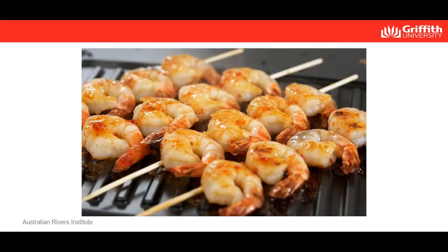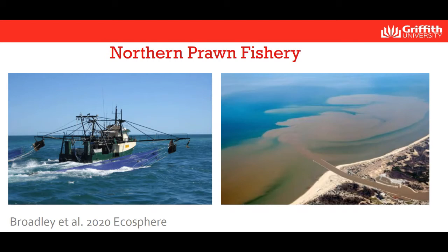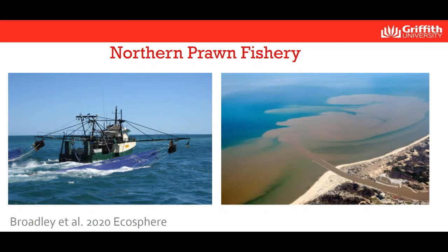Moving to my next case study, which is about prawns — I took some literary license calling my talk 'sharks, shrimp and seagrass,' but I'm actually going to talk about prawns, which is the Australian word for shrimp. The conflict here is really between agricultural development and fisheries. We're looking at the northern prawn trawl fishery, which operates across the north coast of Australia including the Gulf of Carpentaria, catching multiple species of prawns. It's one of Australia's most valuable fisheries with revenue of about $100 million per year. The key species most popular for barbecues is the banana prawn, which you might be surprised to learn depends on natural river flow and fresh water in its life cycle.